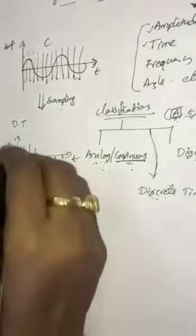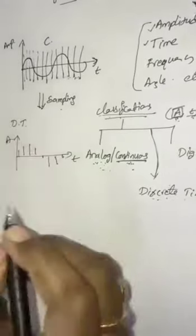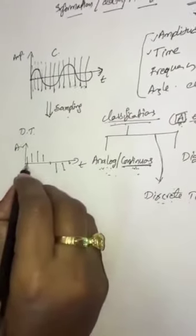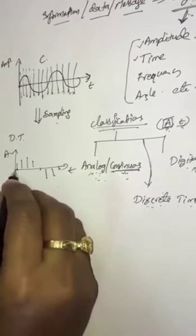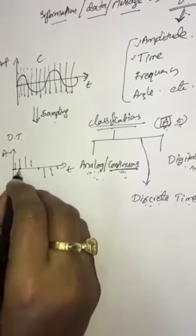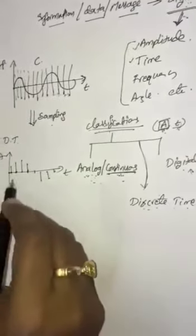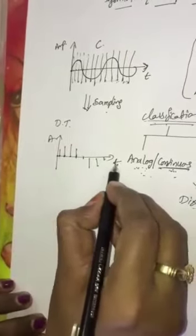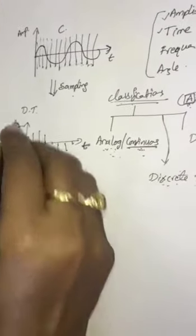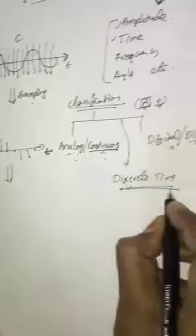This is called a discrete time signal — time is discrete here, amplitude is on the y-axis. We have amplitude values at t = 0, t = 1, t = 2, and so on — only discrete levels of values. We cannot tell what the amplitude is at t = 0.1, 0.001, or 0.003. So time is discrete, but amplitude is still continuous. This is the discrete time signal classification.